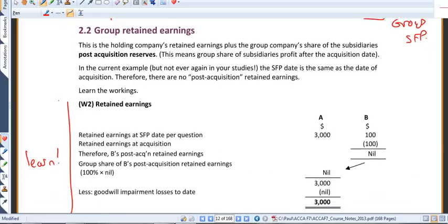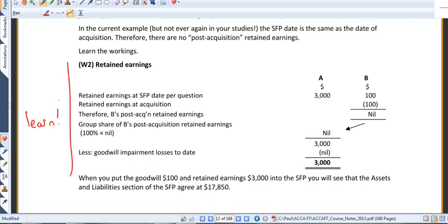So let's have a look at retained earnings. This one's a bit more fiddly. What we're going to do here, ultimately, is we're going to take the reserves of the parent, A, and we're going to add those to the post-acquisition reserves of our subsidiary, B.